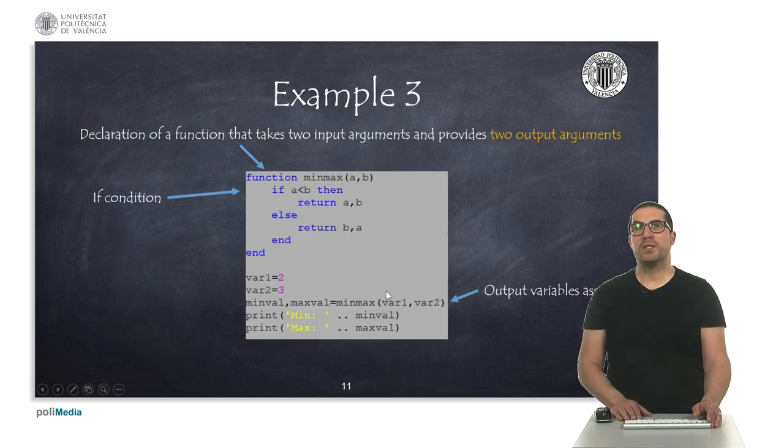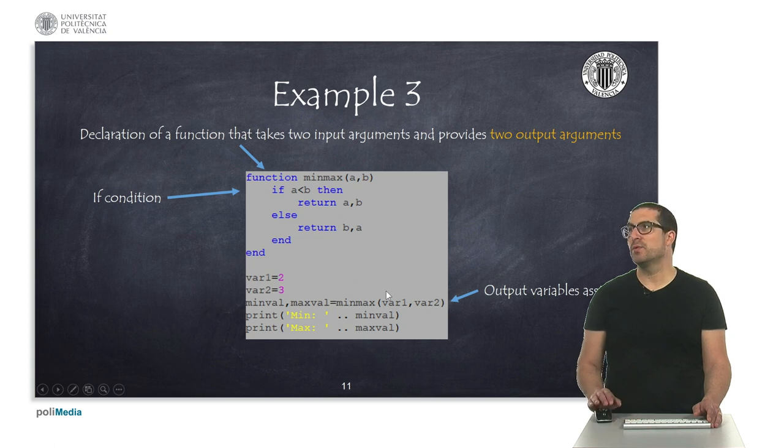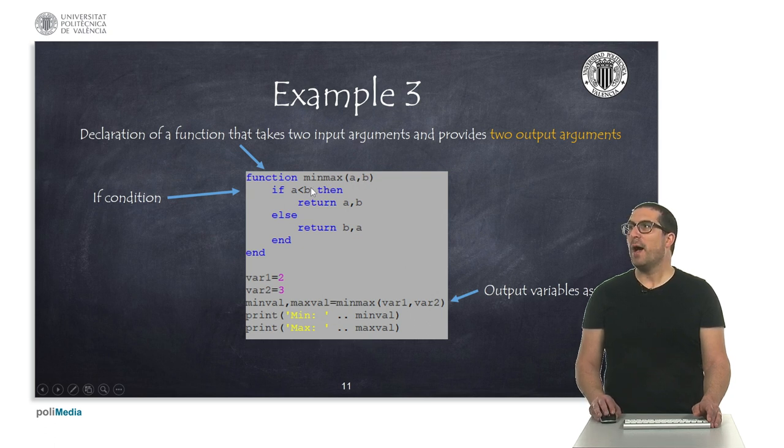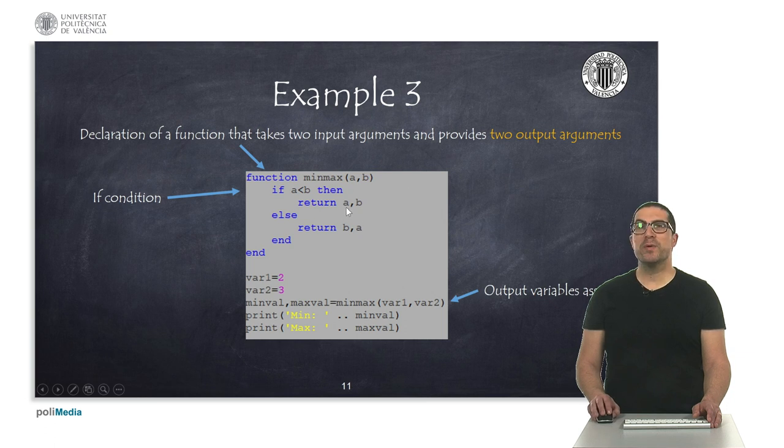Okay, in this other example, I'm just basically computing the minimum and maximum of two numbers. The function accepts two numbers as well. And in this case, I'm simply doing a decision, or making a decision, in which I'm comparing the numbers. If a is smaller than b, then I will return, and then you have to take a look at that, I will return two arguments, a, b. This is the way we use in Lua to return two output arguments.